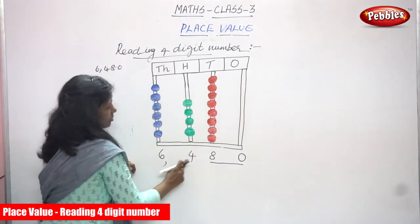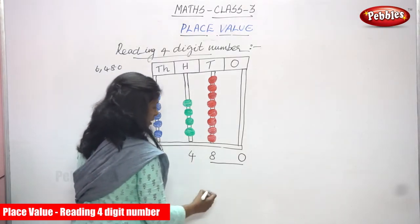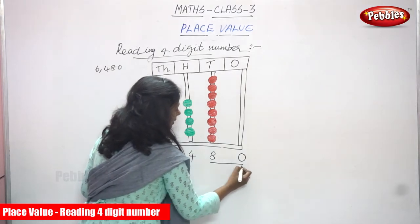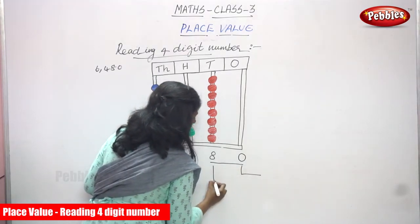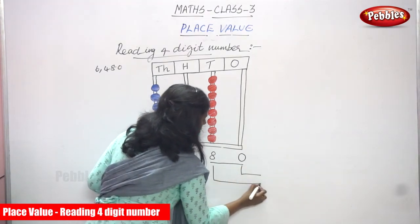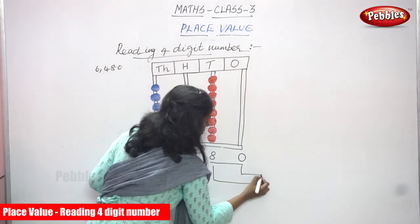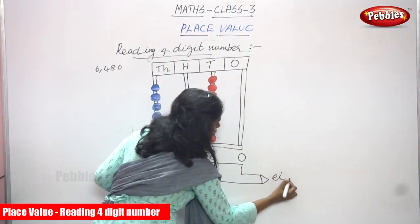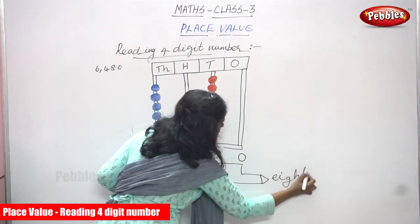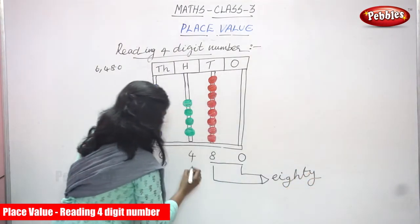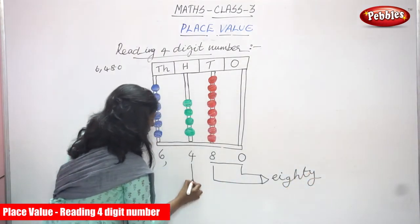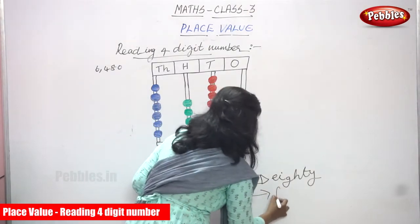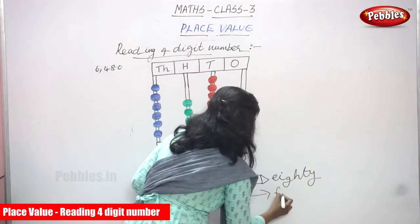To read the number 6480, you connect the digits together. Take the last two digits — you write 80, connecting tens and ones. The next part is how many hundreds, which is four hundreds.